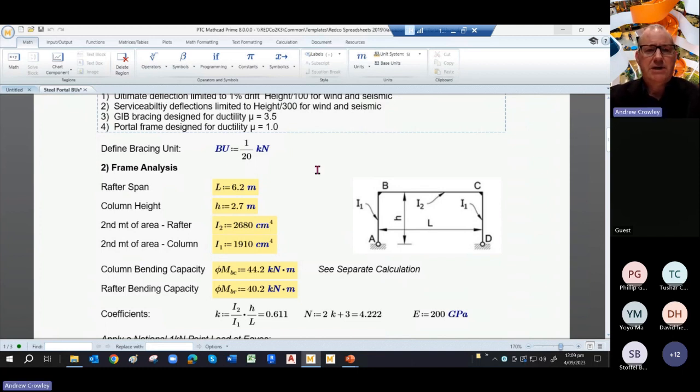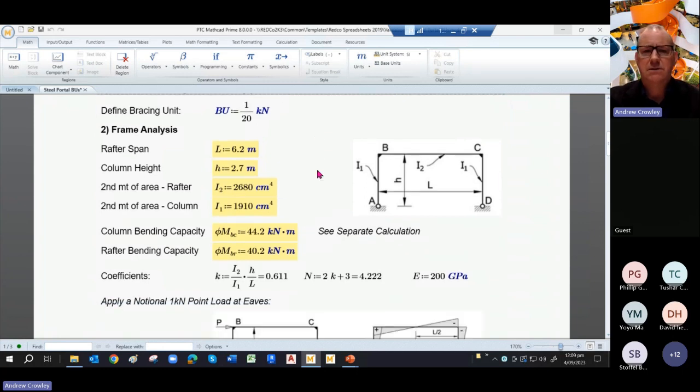So Mathcad allows you to define units, and jib has defined the unit of a BU. What on earth is a BU? It's a bracing unit. Well, it's simply one twentieth of a kilonewton. Why oh why didn't they just use units?